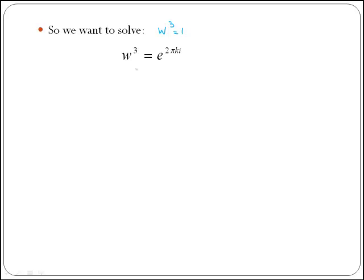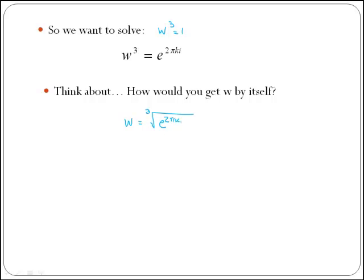So now we think about how to get w by itself. If we take the cubic root, we will get w by itself. So we have w is equal to the cubic root of e to the power of 2 phi k i.